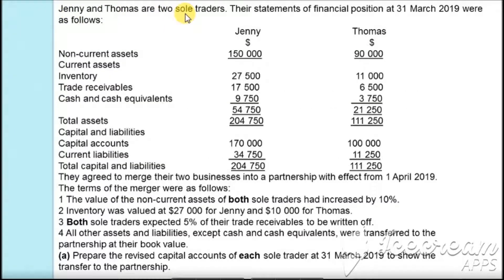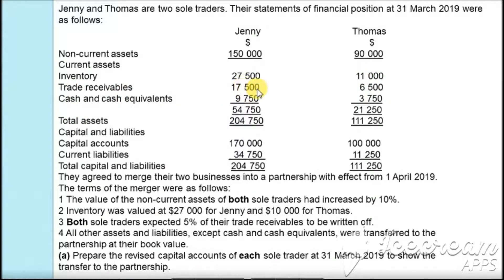The question states that Jenny and Thomas are two sole traders. Their statement of financial position at 31st March 2019 is as follows. Jenny's non-current assets are $150,000 and Thomas's are $90,000. Current assets: inventory for Jenny is $27,500 and for Thomas is $11,000. Trade receivables for Jenny is $17,500 and for Thomas is $6,500. Cash and cash equivalents for Jenny is $9,750 and for Thomas is $3,750. Total assets for Jenny is $204,750.